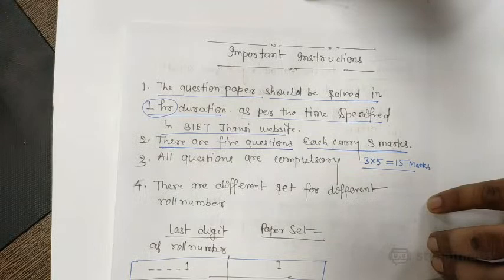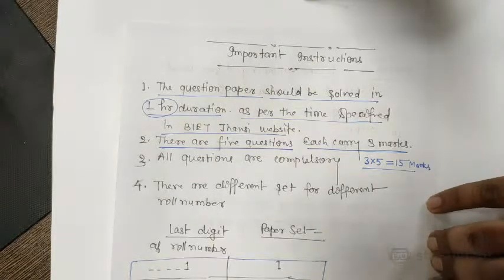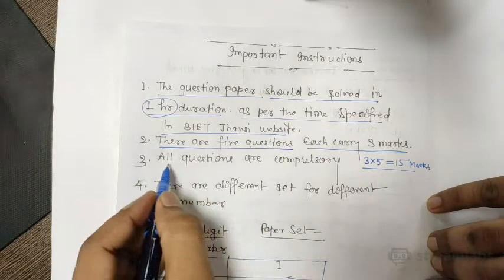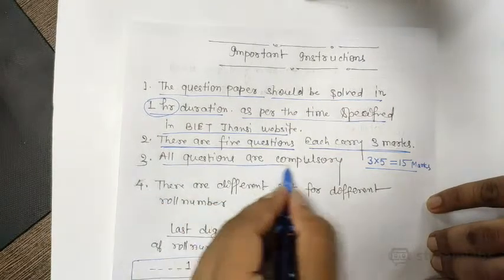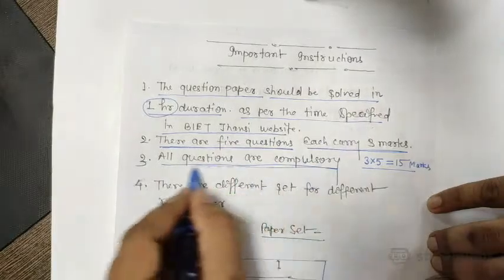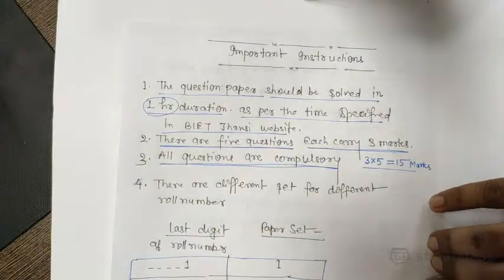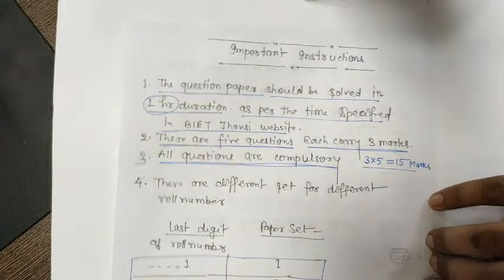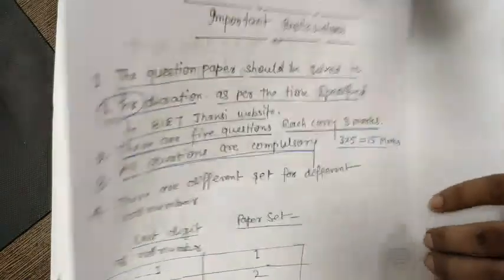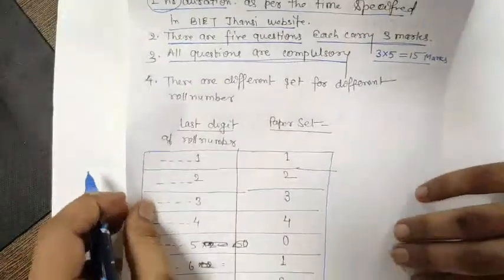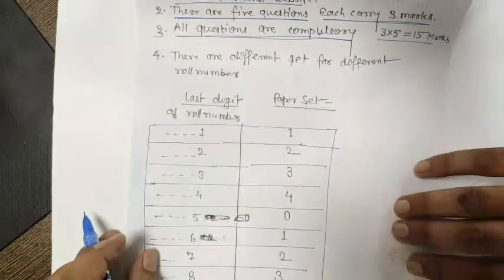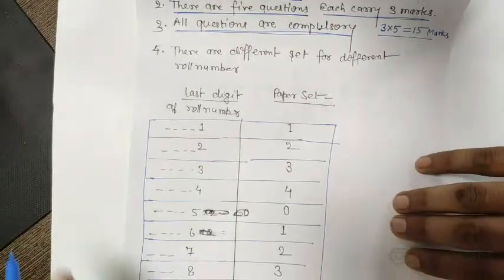Time will start at 2 pm and end at 3 pm. All questions in the paper are compulsory, and according to your roll number you have to select your set of question paper.